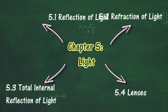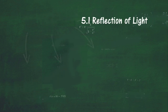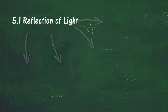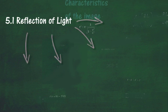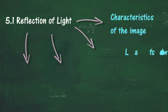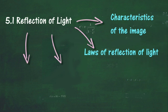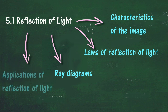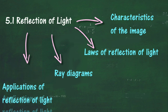In Section 5.1, we will learn about Reflection of Light. At the end of this section, you should be able to: describe the characteristics of the image formed by reflection of light, state the laws of reflection of light, draw ray diagrams to show the position and characteristics of the image formed by a plane mirror, convex mirror, and concave mirror, describe applications of reflection of light, solve problems involving reflection of light, and construct a device based on the application of reflection of light.